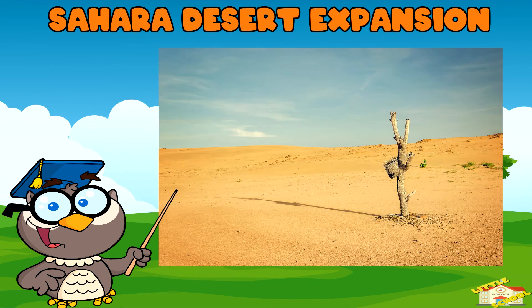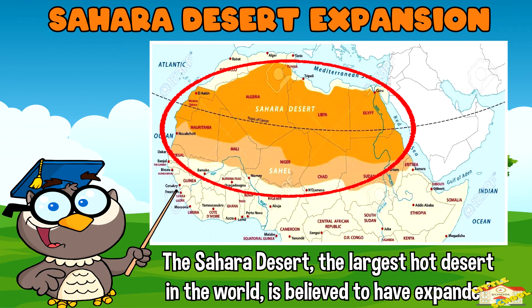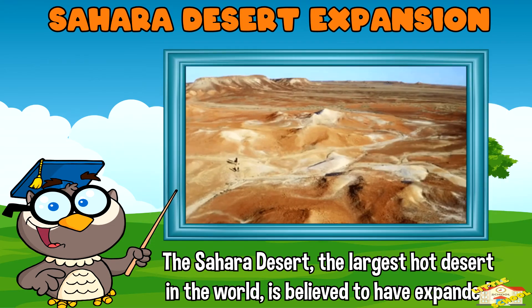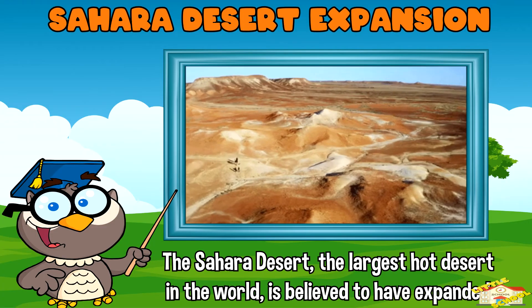Sahara Desert expansion. The Sahara Desert, the largest hot desert in the world, is believed to have expanded and contracted over millennia due to periods of prolonged drought.